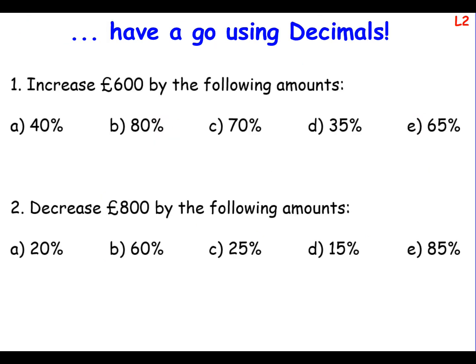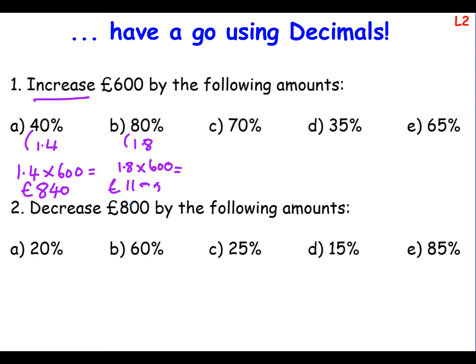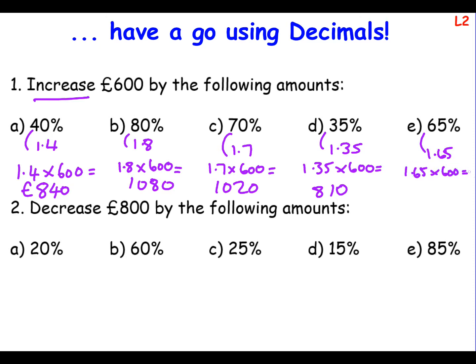Have a go at increasing and decreasing 600 and 800 pounds using the decimal method. To decrease 800 by 20%, it's 1 minus 0.2 which is 0.8, so it becomes 0.8 times 800.